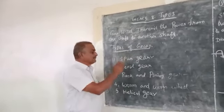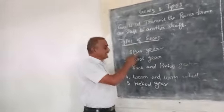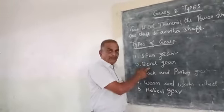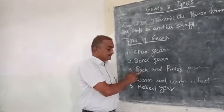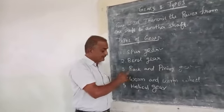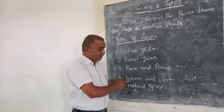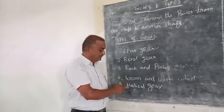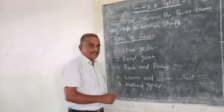The types of gears are: spur gear, bevel gear, rack and pinion, worm and worm wheel, and helical gear.